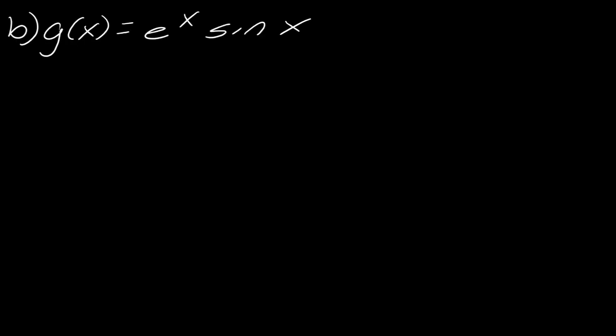So moving on to b here. So now for b, we're going to have to use the product rule to do this. So with the product rule, first I take the derivative of e to the x. The derivative of e to the x is just e to the x. And I do nothing to the second part of this. So I leave sine of x alone.